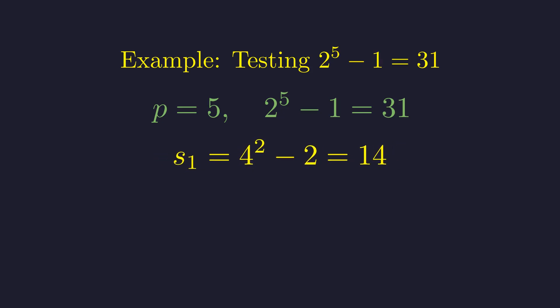Now we square 14 and subtract 2. Step 2, s equals 14 squared minus 2 equals 194. Now we reduce this modulo 31. 194 modulo 31 equals 8.